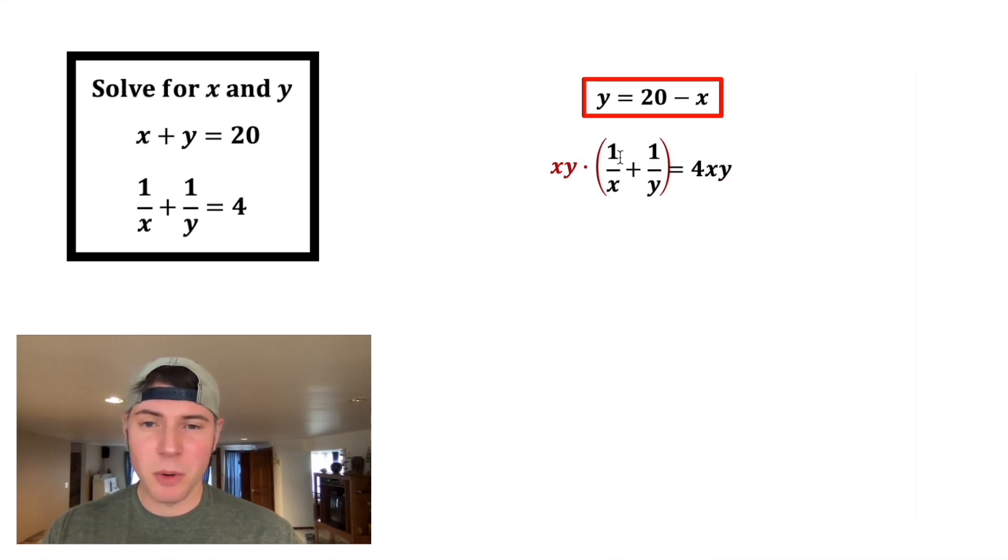On the left-hand side, the x, y is gonna distribute to both of these, so both of these ones are gonna change into x, y. x over x are gonna cancel each other out to give us y. y over y will cancel each other out to give us x.